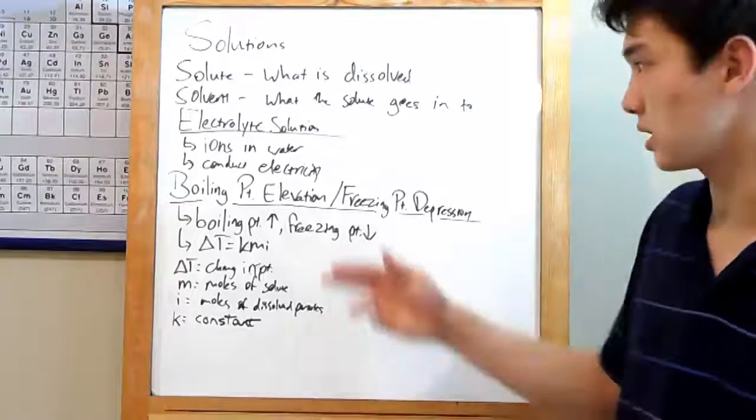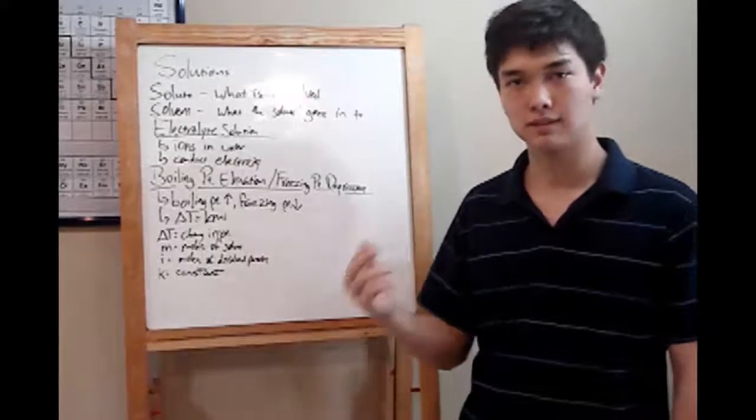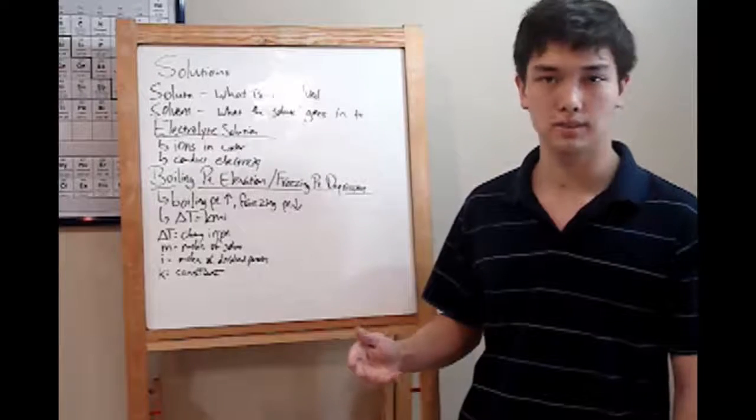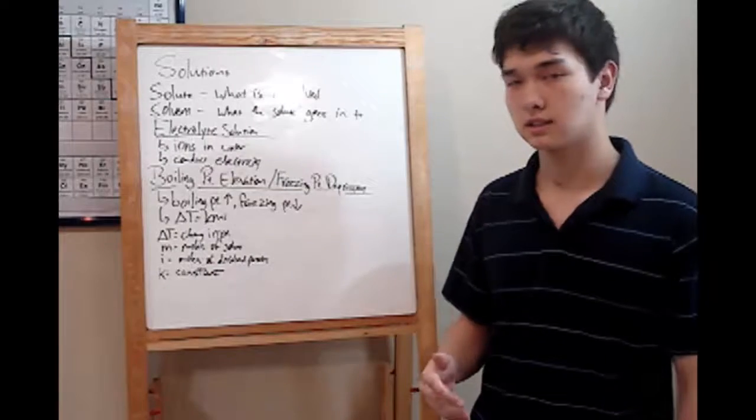Now that particular combination results in something called an electrolyte solution. Whenever you dissolve ions in water, you get one of these. These solutions will conduct electricity because they've got charged particles in them, the ions. If you dissolve something that wasn't charged, like sugar, it wouldn't be able to conduct electricity at all.